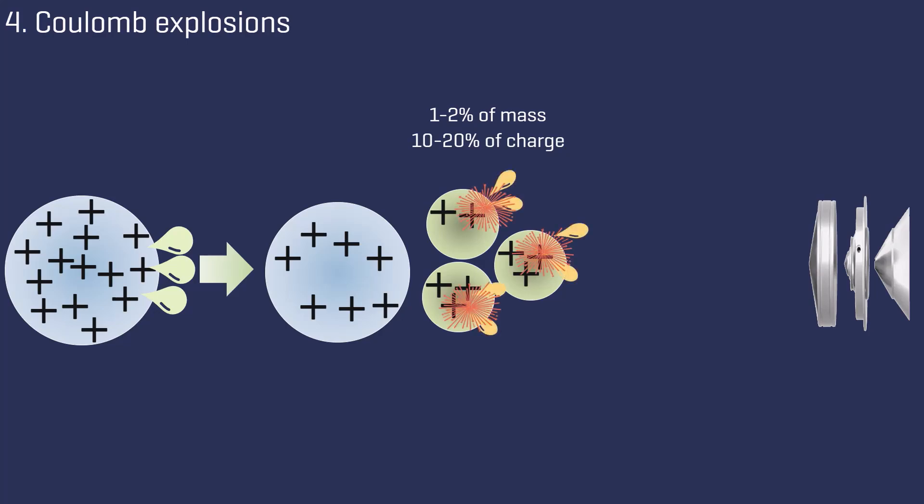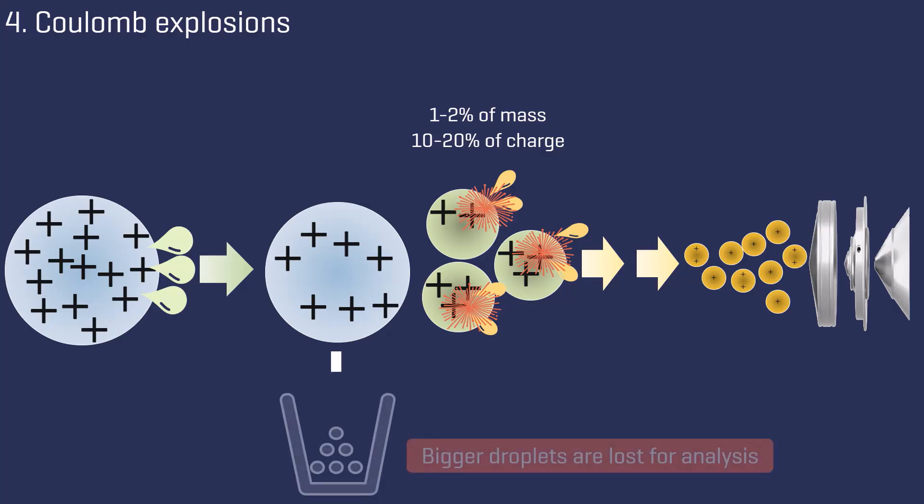In subsequent events, the smaller droplets continue to shrink and undergo the same process as the larger droplets before. While the bigger droplets stop forming smaller droplets as soon as they have lost a critical number of charges. They are separated before they reach the entrance of the mass spectrometer and are lost for analysis.